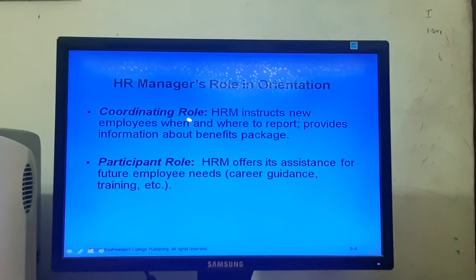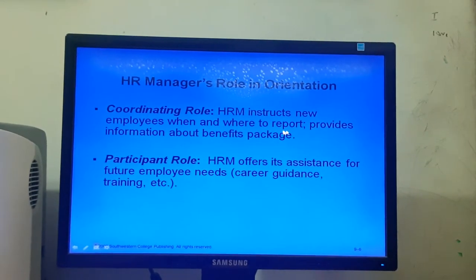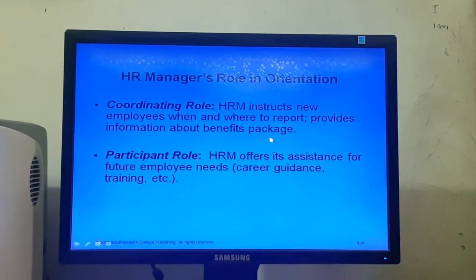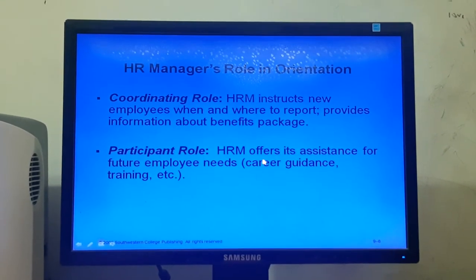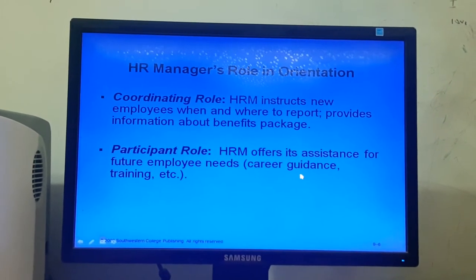Now we shall discuss the HR manager's role in the orientation program. The HR manager performs two major roles: a coordinating role and a participant role. In the coordinating role, the HR manager instructs new employees on when and where to report and provides information about benefit packages. In the participant role, the HR manager offers assistance for future employee needs such as career guidance and training.